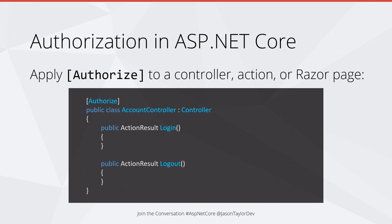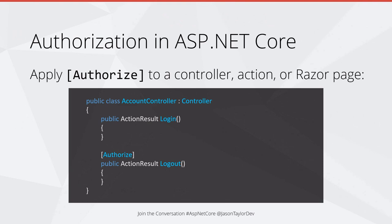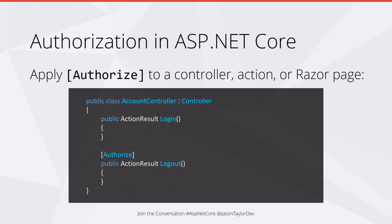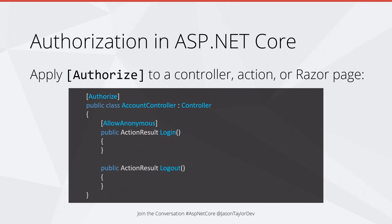In the next example, we've moved the Authorize attribute down to a specific action, fixing a bug where only authorized users could hit the login action — meaning nobody could log in. Now the Authorize attribute is on the logout action, so you have to be authenticated to log out, and the login action is available to anonymous users. Another way to do this is to put Authorize on the controller and use the AllowAnonymous attribute on the login action — it achieves the same thing.